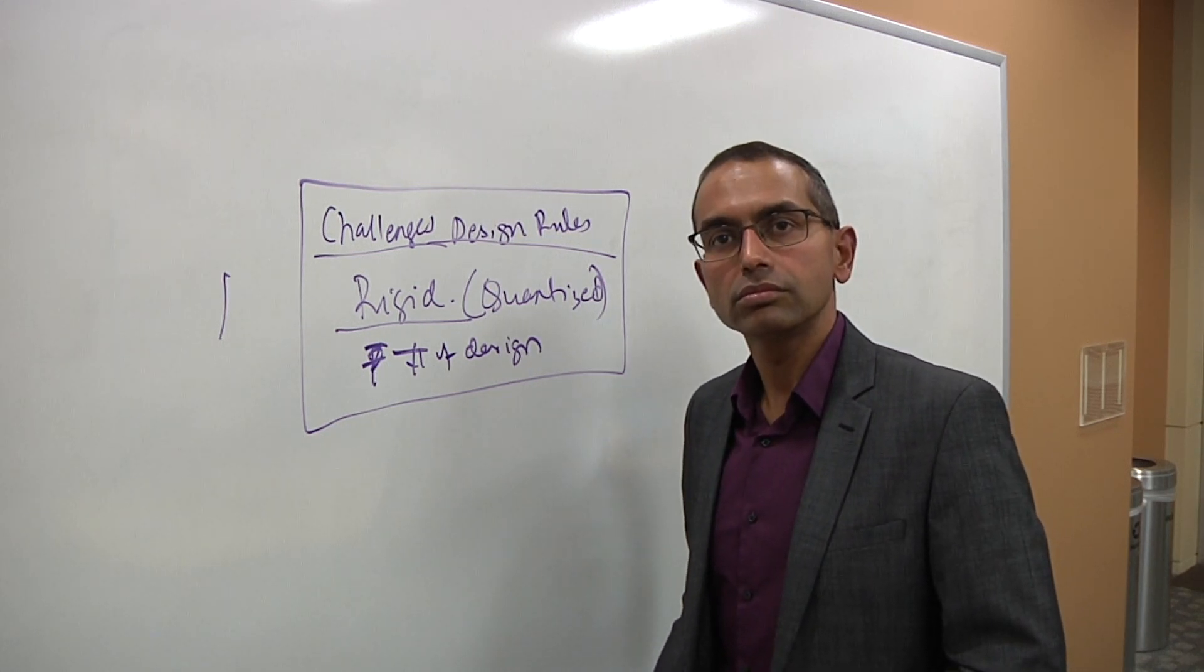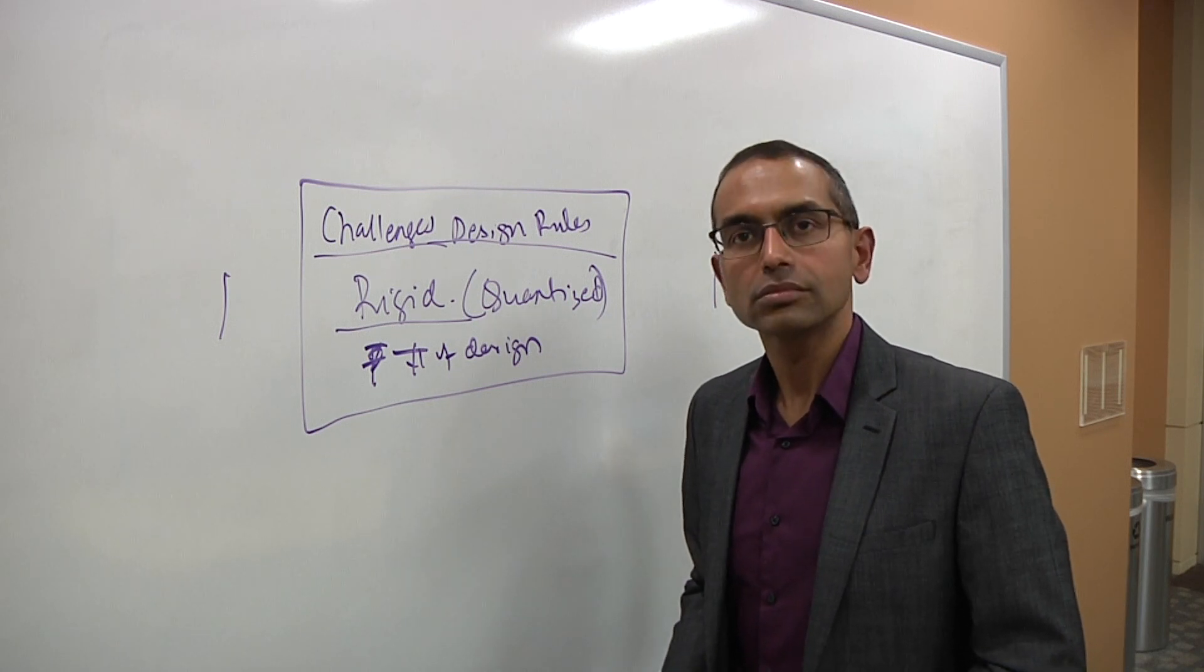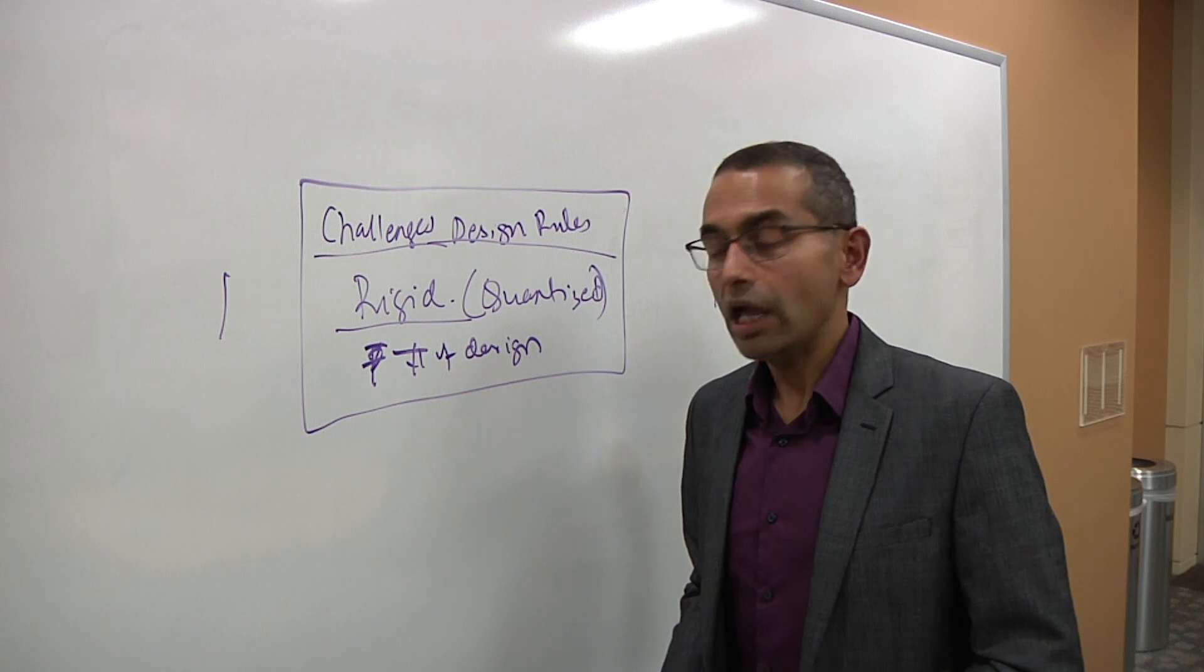The tolerances that you have to deal with in analog as you move down to 7 nanometers, 5 nanometers are very tight, and they affect analog more than they do digital, right? Absolutely.